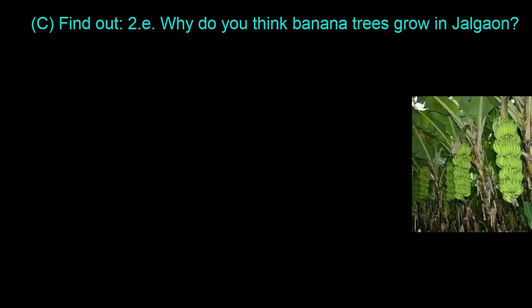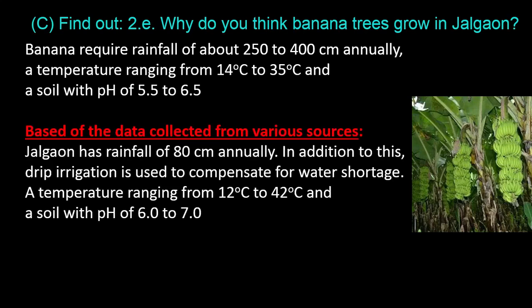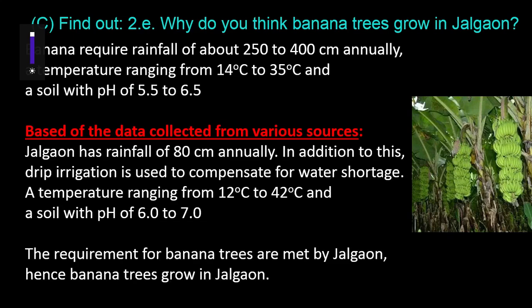Question C.2.E: Why do banana trees grow in Jalga? Banana requires rainfall of about 250 to 400 centimeters annually, a temperature ranging from 14 to 35 degrees Celsius, and a soil pH of 5.5 to 6.5. Based on data collected from various sources, Jalga has rainfall of 80 centimeters annually. In addition to this, drip irrigation is used to compensate for water shortage. A temperature ranging from 12 to 42 degrees Celsius and soil pH of 6.0 to 7.0. The requirements for banana trees are met by Jalga, hence banana trees grow in Jalga.